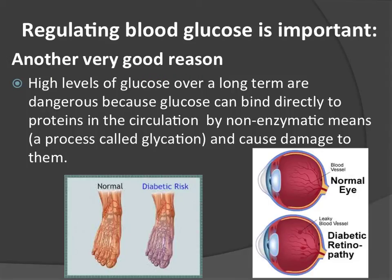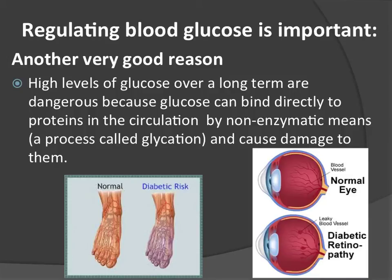Another reason why regulating blood glucose is important: we know that low glucose is quite a significant problem in the short term, becoming serious very quickly. But high levels of glucose can have quite significant health effects over the long term — over months to years, glucose builds up in the bloodstream, binding to proteins in circulation and causing problems in very small capillaries and blood vessel beds. This process is called glycation, where proteins get glucose molecules added to them, becoming much larger than before, and in very small blood vessels they can actually block them.